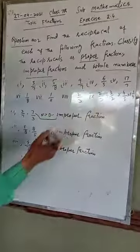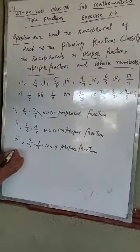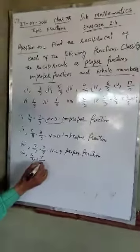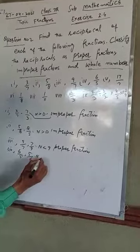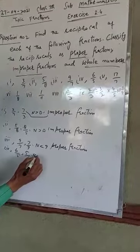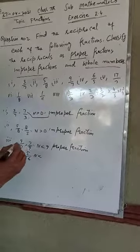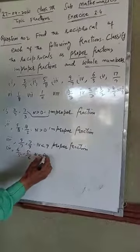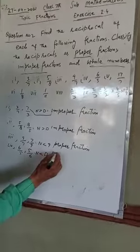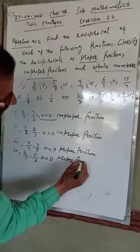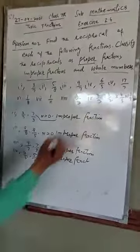Now we go to part number 4. Part number 4 is 6 by 5. Its reciprocal is 5 by 6. Here the numerator is less than the denominator, so the fraction is a proper fraction.